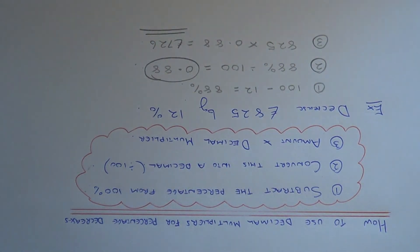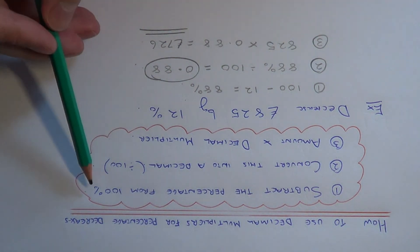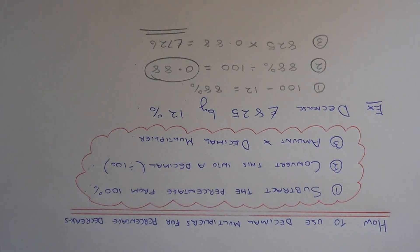Before we finish, let me just explain. If you were to do a percentage increase using decimal multipliers, then you change step one and you add the percentage onto 100.